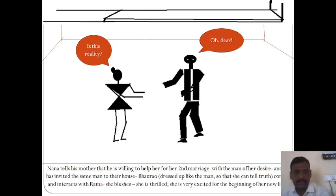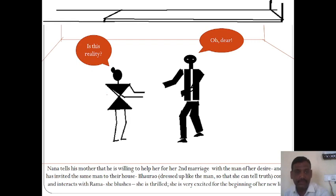Nana tells his mother he is willing to help her in a second marriage with the man of her desire, and has invited the same man to their house. Nana and Baurav make a plan: Nana tells Baurav to wear the same type of clothes as the person third from the left. Baurav dresses up like that man so that Rama can tell the truth. He appears and interacts with Rama. She is thrilled and very excited for the beginning of her new life. A kind of romantic scene unfolds as Baurav poses as the third from the left and says 'Oh dear.'